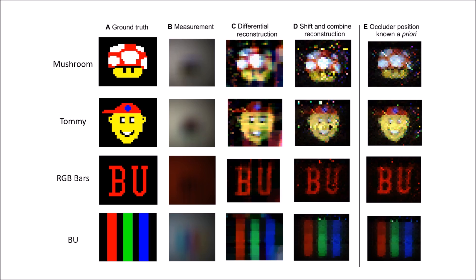Column D shows the reconstruction achievable with a different algorithm which combines various shifted reconstructions formed using transport matrices where the assumed occluder position is varied. Lastly, column E shows the reconstruction achieved if the occluder position is known a priori and not estimated.